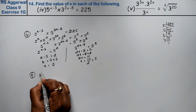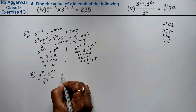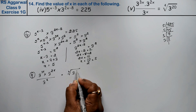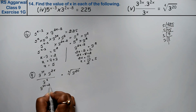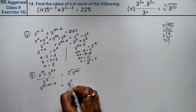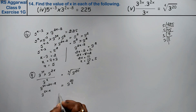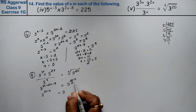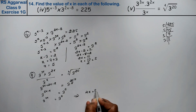Last part: 3^(3x) × 3^(2x) ÷ 3^x equals the 4th root of 3^20. Combining powers on the left using exponent rules: 3x + 2x − x = 4x. The right-hand side, the 4th root of 3^20, is 3^(20/4) = 3^5. So 3^(4x) = 3^5, meaning 4x = 5, and x = 5/4 is the answer.